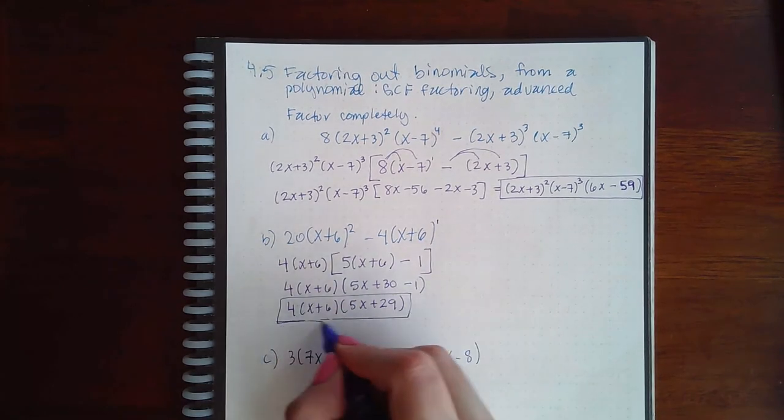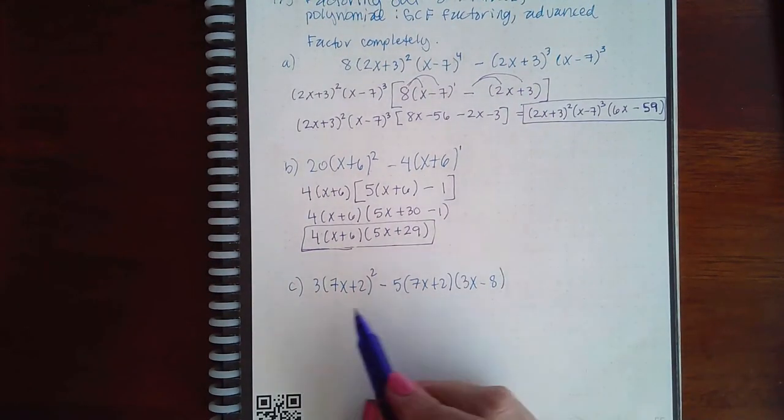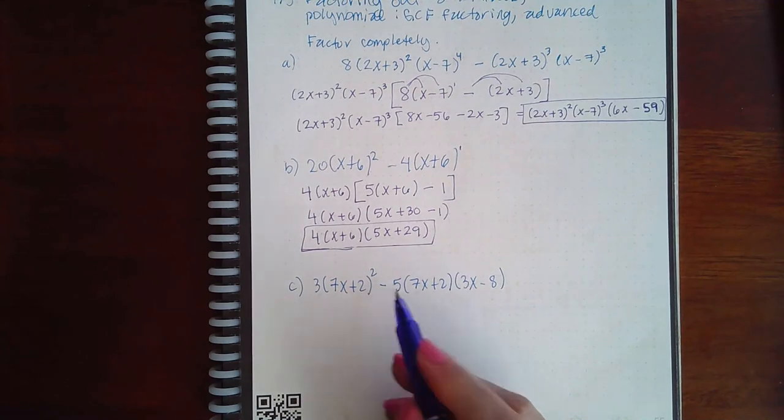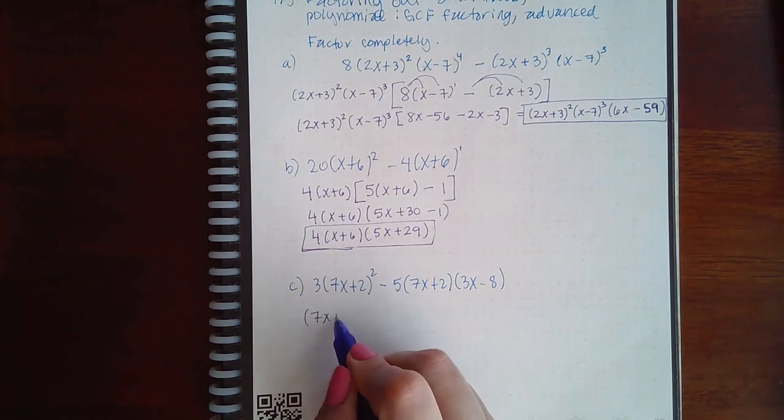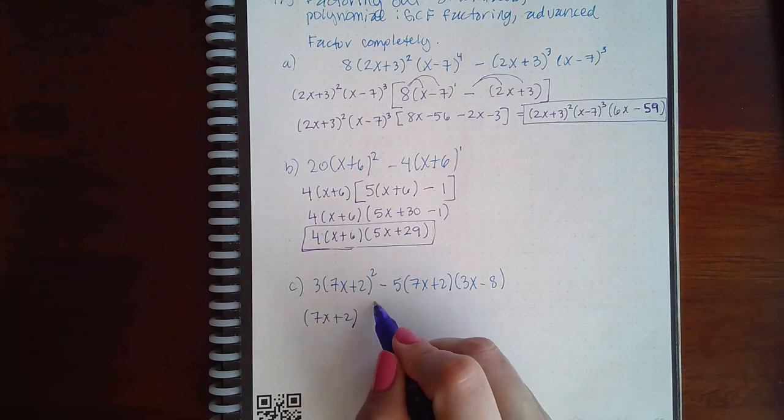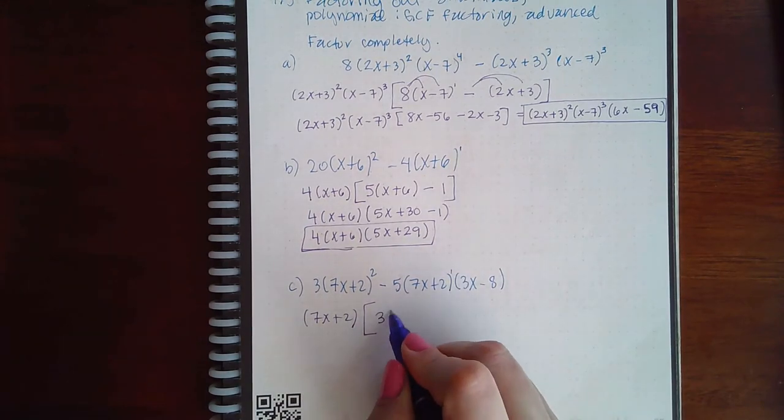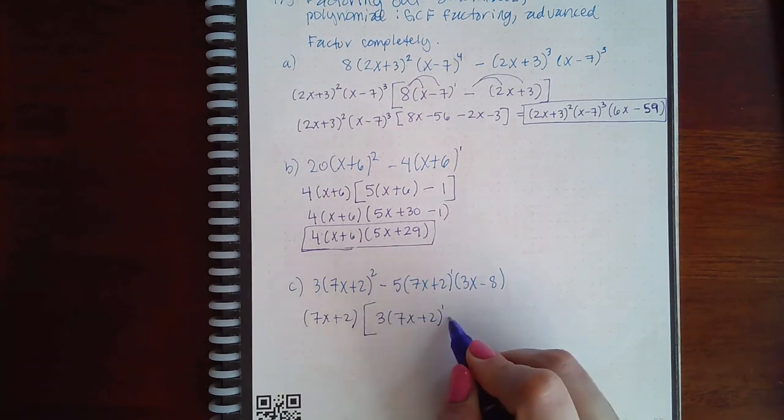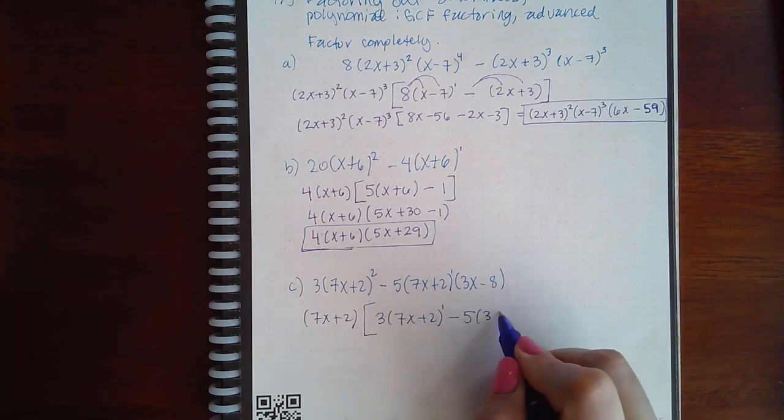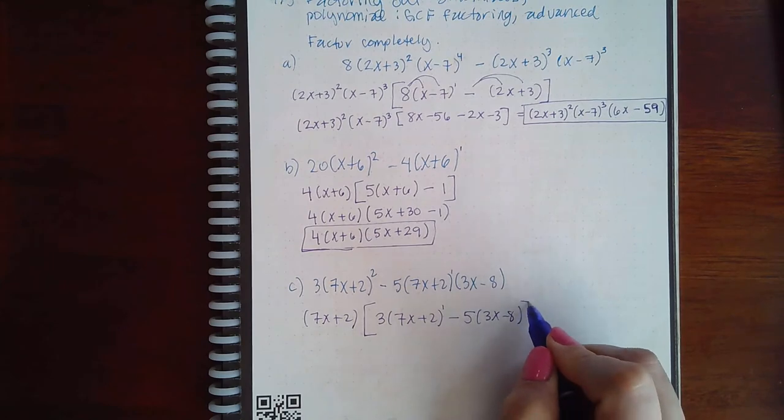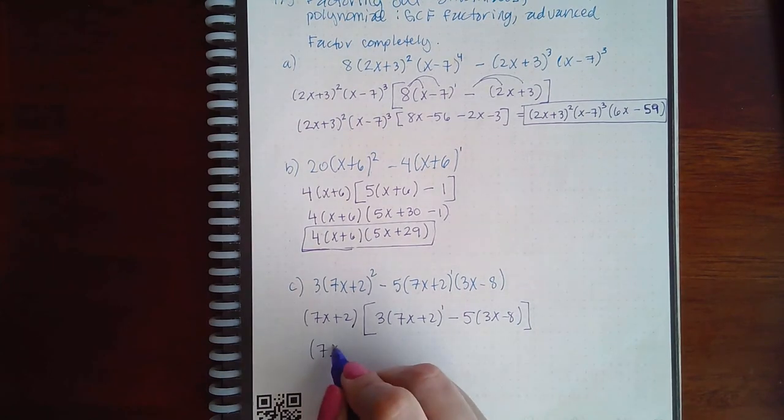Now for the last one, they don't have a coefficient in common. They do have this 7x plus 2 in common, and I can only factor one of them out. I'm going to end up with 3, one of these left, minus 5 times 3x minus 8.